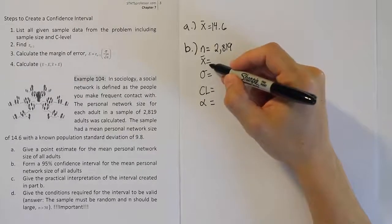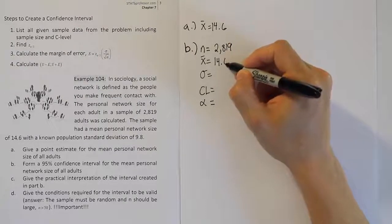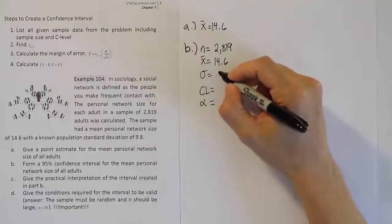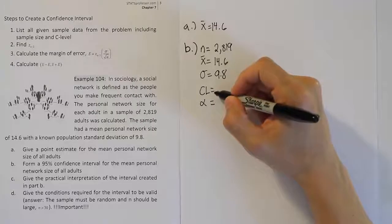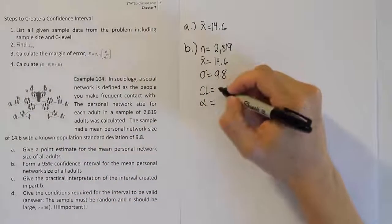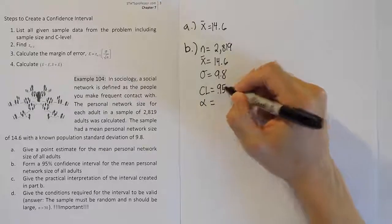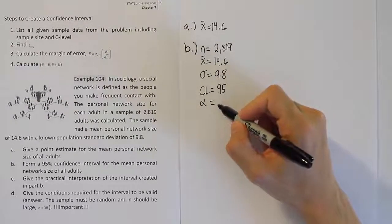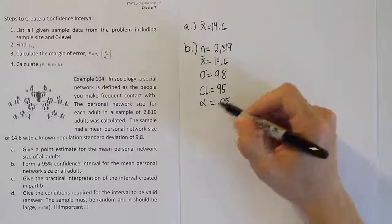The population standard deviation is 9.8. The confidence level in the problem, part B, is 95%. And alpha would have to be 5%, because the two of them have to add up to 100, so 0.05.